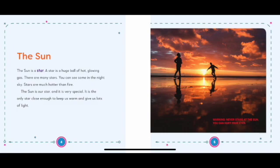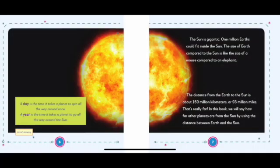The Sun. The Sun is a star. A star is a huge ball of hot, glowing gas. There are many stars. You can see some in the night sky. Stars are much hotter than fire. The Sun is our star and it is very special. It is the only star close enough to keep us warm and give us lots of light. A day is the time it takes a planet to spin all the way around once. A year is the time it takes a planet to go all the way around the sun.